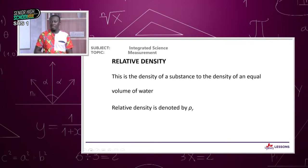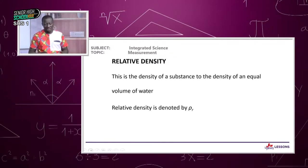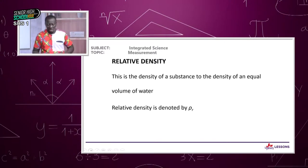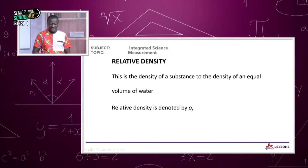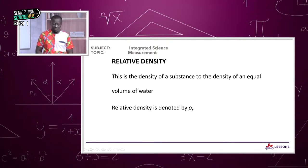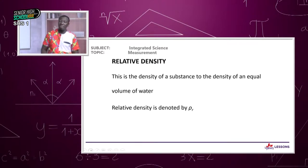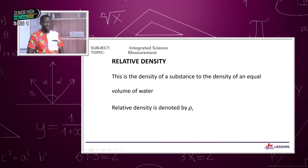Sometimes it is easier to compare the density of a substance to the density of another. We have what we call relative density, where we compare the density of one substance to the density of another. By definition, relative density is the density of a substance compared to the density of an equal volume of water. It is denoted by rho with subscript r.